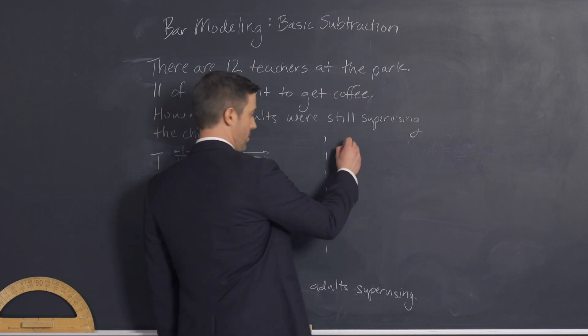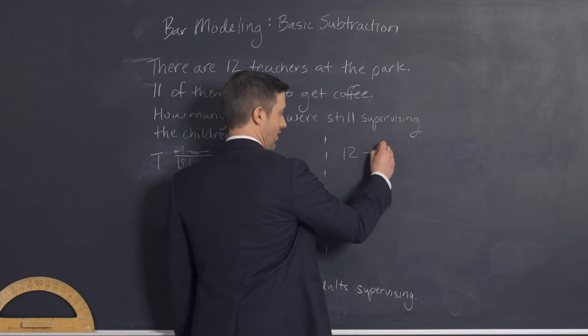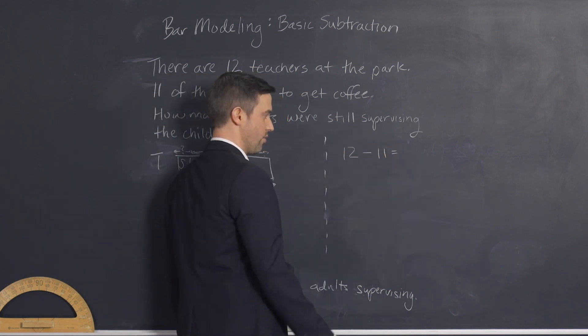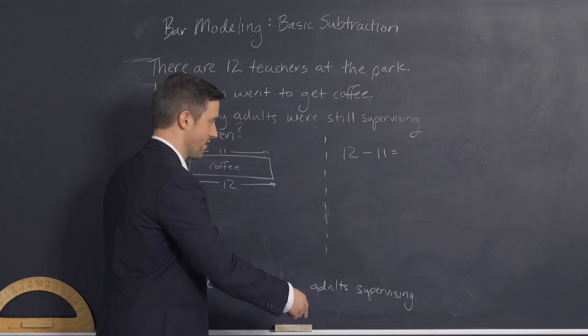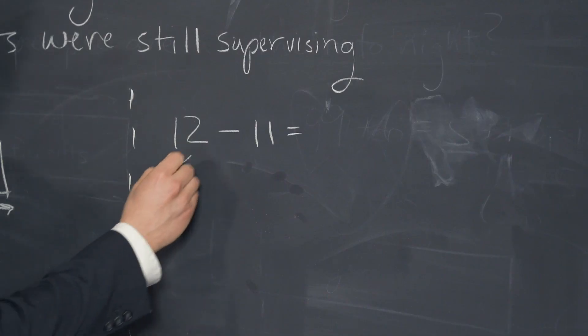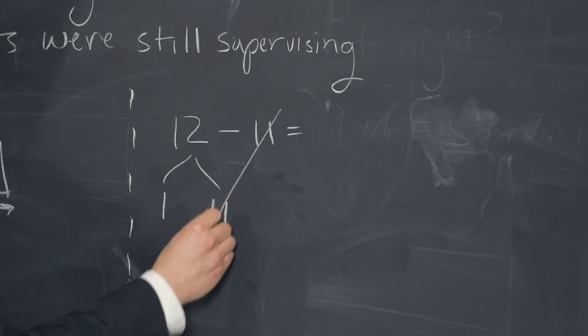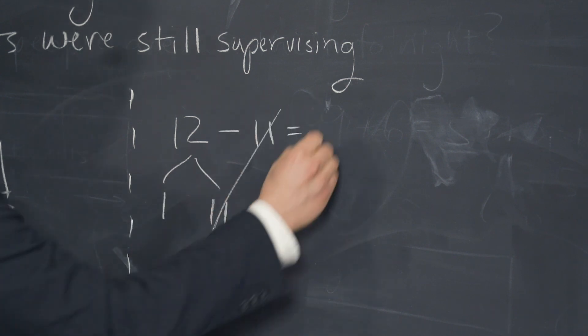So we would go over here for the arithmetic. 12 minus 11 is equal to... And you can do a number of things. Again, let's practice a number bond. 12 is 1 and 11. So then I could take away my 11s and I'm left with 1.